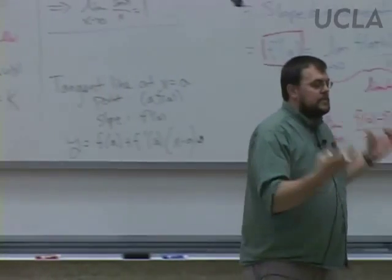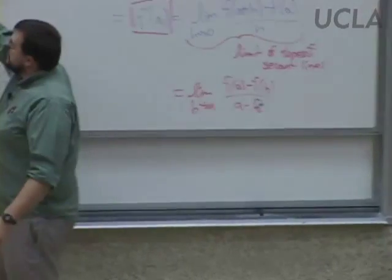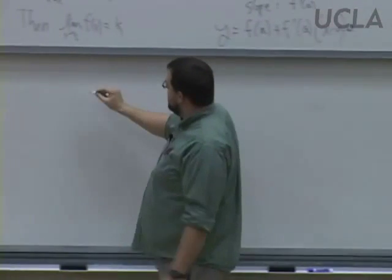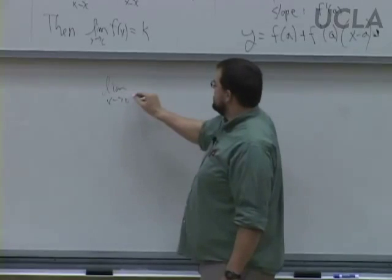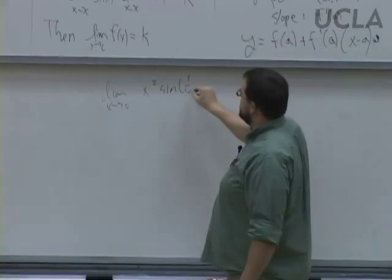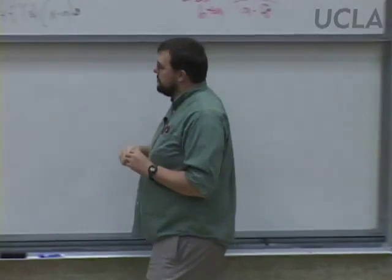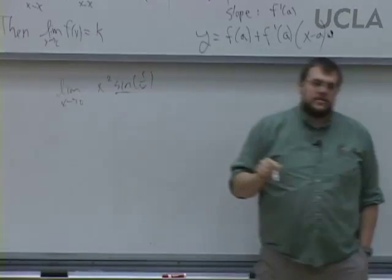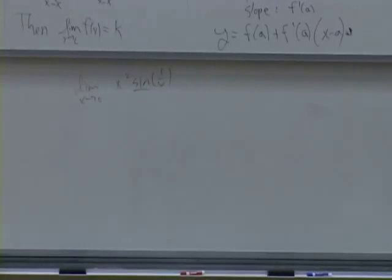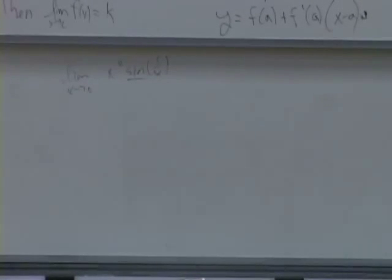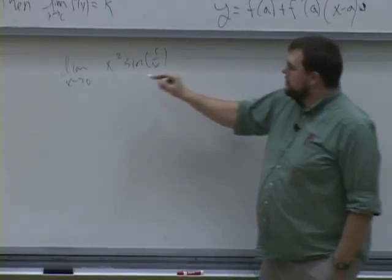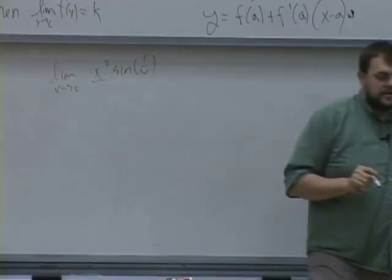For example, suppose we ask about the limit as x approaches 0 of x²sin(1/x). We already discussed that the limit of sin(1/x) is a really bad function — it does all these infinite oscillations as we approach zero. So we think the limit probably doesn't exist. But then we say, wait — you threw in this x² term, that might mess things up.